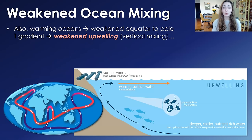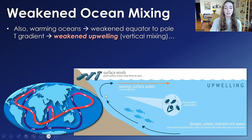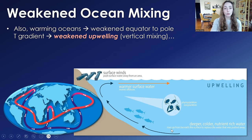The warming oceans are also weakening the equator-to-pole temperature gradient in both the atmosphere and oceans, which is weakening vertical mixing in the oceans. This temperature gradient, and the winds caused by the atmospheric temperature gradient, are what drive upwelling — the mixing of bottom waters up to the surface at coastlines. This upwelling brings nutrients from deeper, colder water to the surface to cycle nutrients back to primary producers, and it cycles oxygen back down to the deep waters.